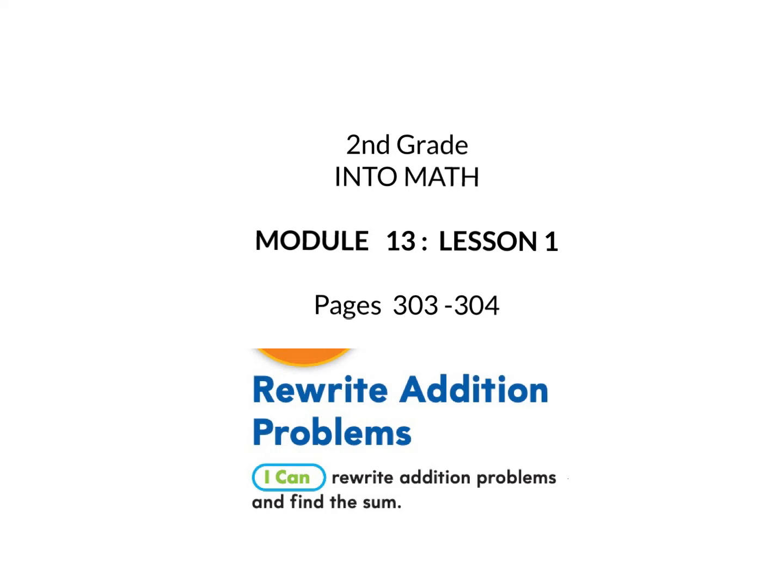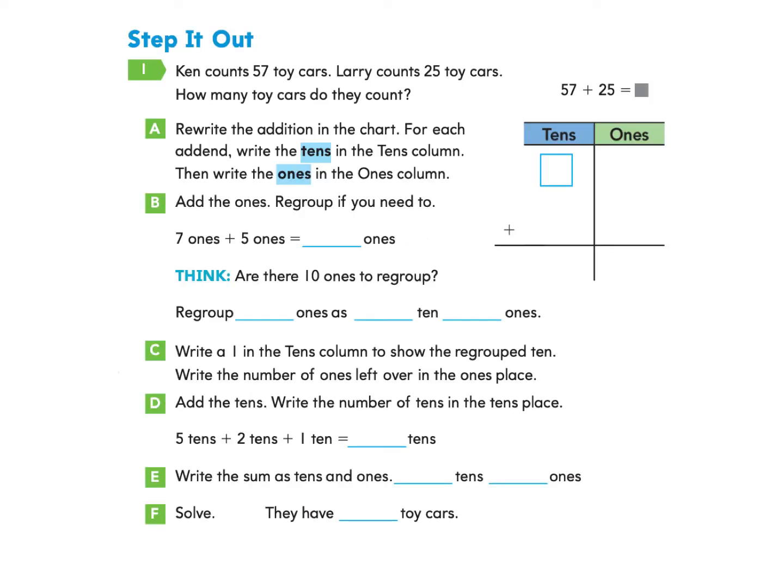This is Into Math 2nd Grade, Module 13, Lesson 1. We are going to start on page 303, and the goal is to rewrite addition problems and find the sum. Please get your math workbook and a pencil and turn to page 303. We are going to start at Step It Out, Question 1.